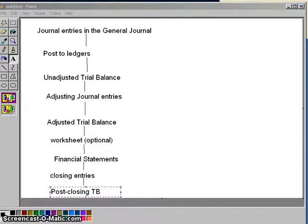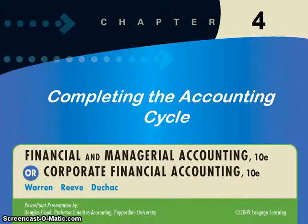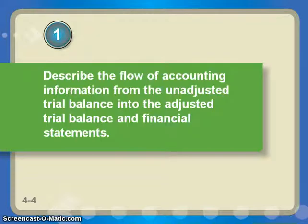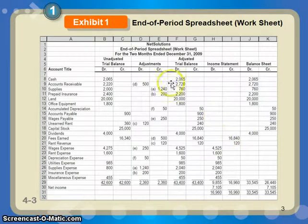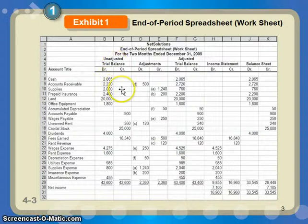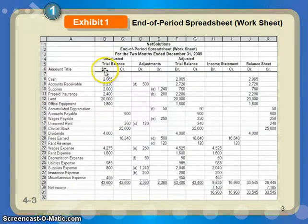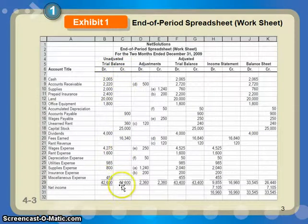Let's go to the PowerPoint slides and look at the worksheet. How the worksheet works is you start off with all the balances in the accounts through the unadjusted trial balance — here's all the debit accounts, here's all the credit accounts. You see the debits equal the credits, and we're good.